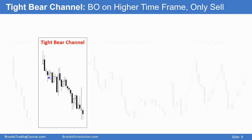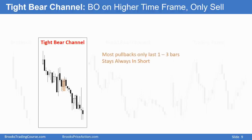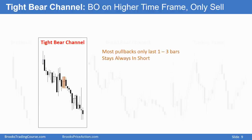Here we have a breakout initially, but then we get a pullback, another pullback, and another reversal attempt. Most of the pullbacks are only a bar or two. The market is going down in a fairly tight channel. If I drew a channel line below and a trend line above, it would be a pretty tight channel. And if I look at this on a higher timeframe chart, it's going to be a breakout — if this is a five-minute chart and I looked at an hourly chart, this would be two big bear trend bars. Because it's a breakout on a higher timeframe, it's better only to look to sell. The market stays always-in-short the whole time, and when that's the case, it's better only to sell.